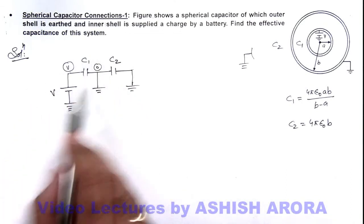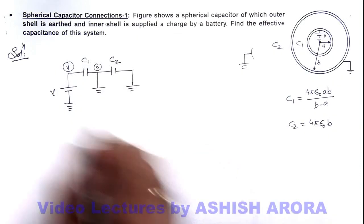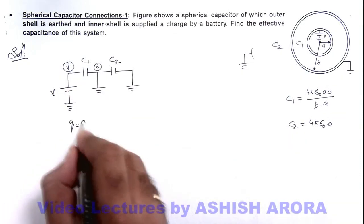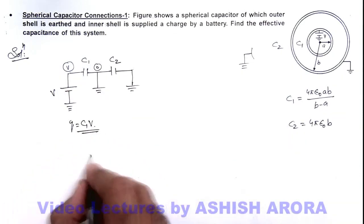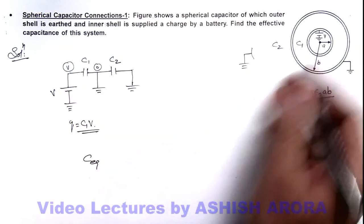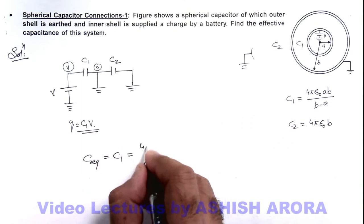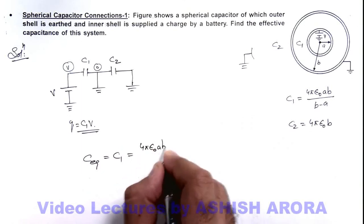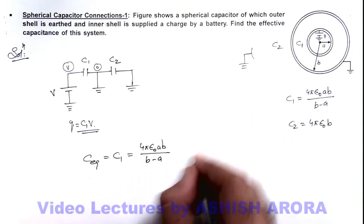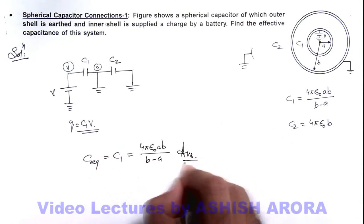So only C1 is the effective capacitance of this system, so battery will supply a charge C1V onto it. And C equivalent or effective capacitance of this system can only be written as C1, which is 4π epsilon not ay b upon b minus ay. That is the answer to this system.